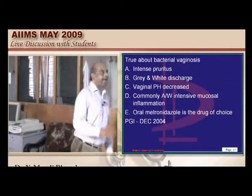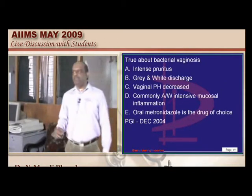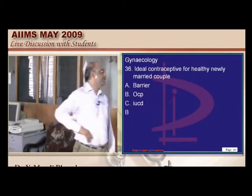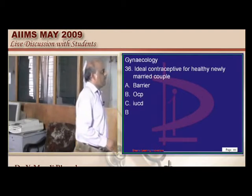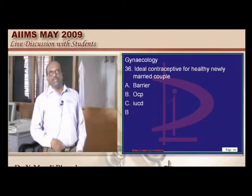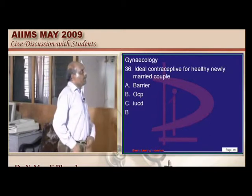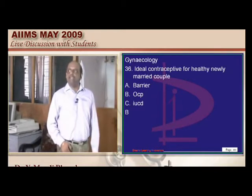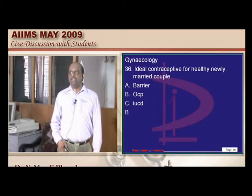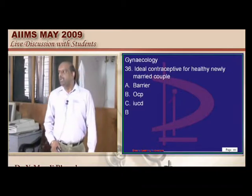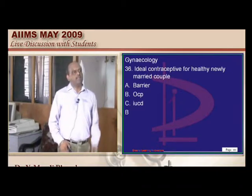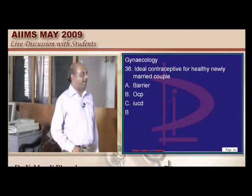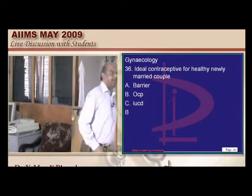What is the ideal contraceptive for the newly married couple? You must be sure on which specific OCPs are used in various scenarios. But if the newly married lady has rheumatic heart disease, you do not give OCP. For rheumatic heart disease, barrier contraception is considered the most ideal contraception.